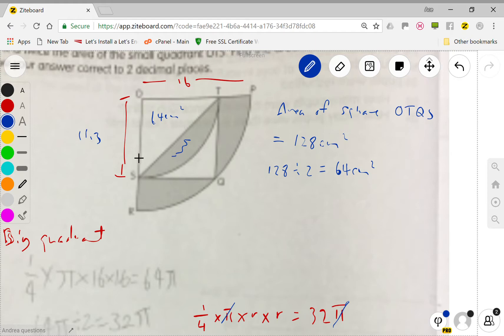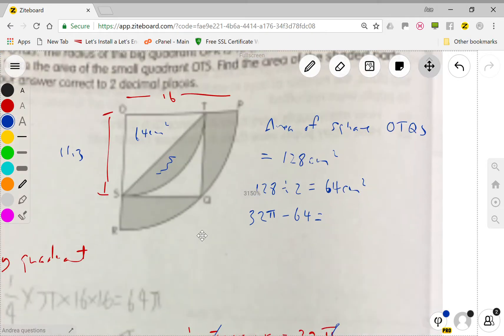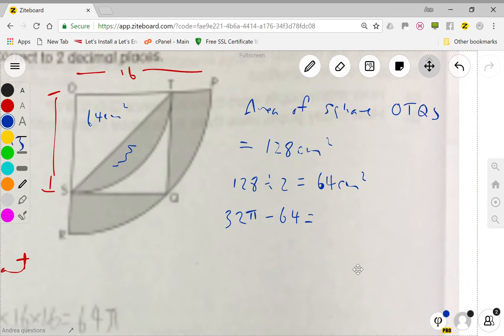Next thing we do is we have to take the small quadrant and remove the 64. So the area of the small quadrant is 32π, so 32π minus 64. What pi do you use? 3.14. So 32 times 3.14 minus 64, I get 36.48 cm square. So this part is 36.48.